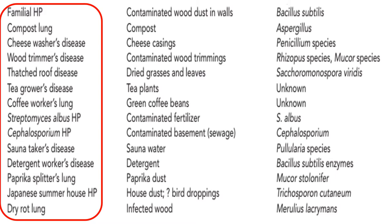Familial hypersensitivity may be due to contaminated wood dust in walls, Bacillus subtilis, and so on. Other diseases include compost lung, cheese washer's disease, wood trimmer's disease, thatched roof disease, tea grower's disease, coffee worker's lung — with Streptomyces albus from contaminated fertilizer — and detergent worker's disease.